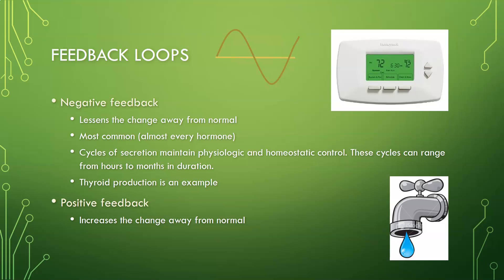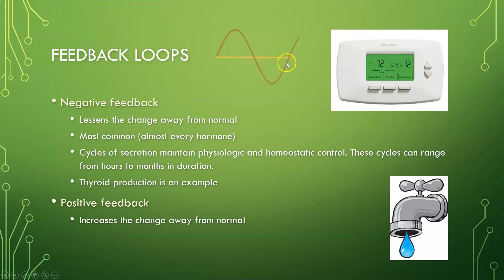There are two types of feedback loops: negative and positive. The negative feedback loop lessens the change away from normal — it is the most common, regulating almost every hormone. As shown in the diagram, with a set level represented by the yellow line: if hormone levels increase above the set point, production will decrease to bring levels back down; if they drop below the set point, production will increase to bring levels back up.